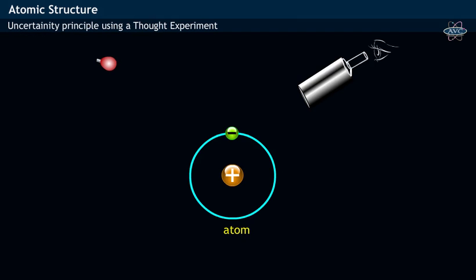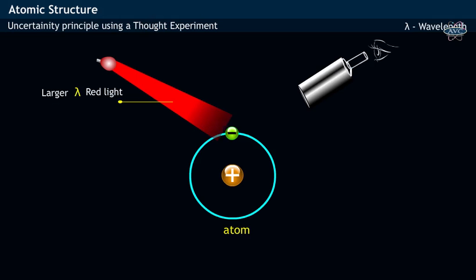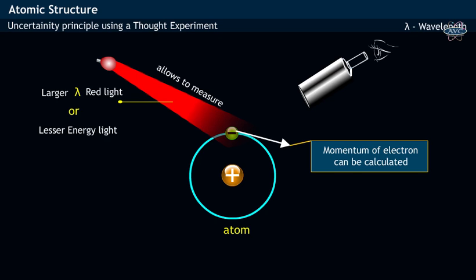In a similar fashion, larger wavelength light having lesser energy would allow us to measure the momentum of an electron.